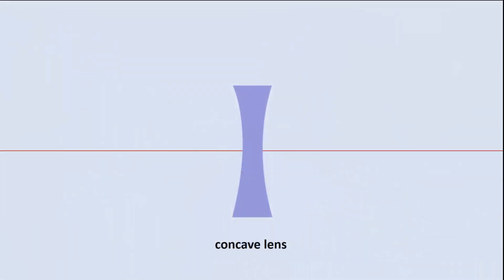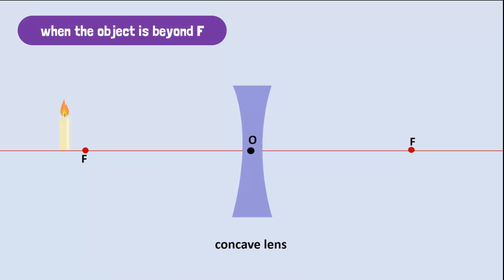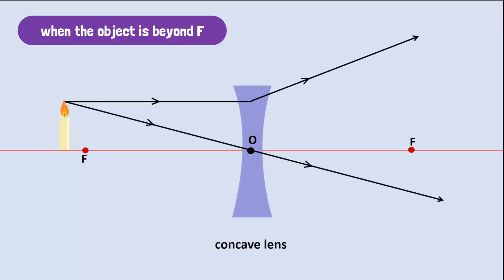But what about a concave lens? The rays always diverge, so the emerging rays do not actually meet. Thus, a real image is never formed. If we place the candle beyond the focal point, the rays will leave from the top of the candle through the lens and refract. The image, however, will be formed on the same side between F and O. We can see this as we trace back the refracted ray. A virtual image is formed that will be smaller than the object.